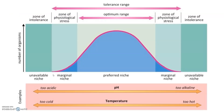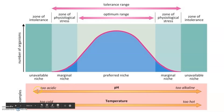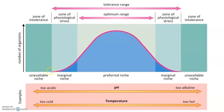This graph has a lot on it, but if we take it bit by bit it's really not that much that's new. If we take a pH scale and go from the most acidic to the most alkaline or most basic, there's going to be a range in which most organisms will do best.